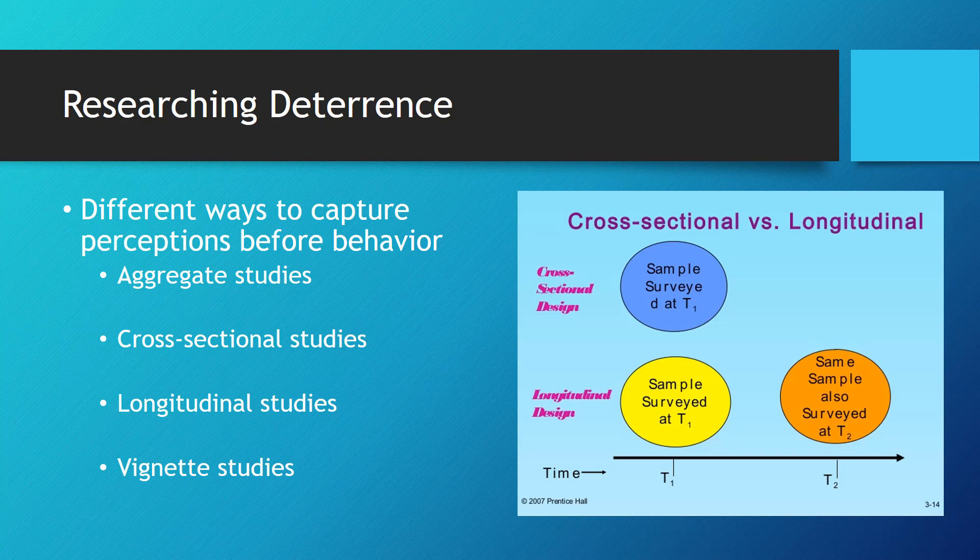Cross-sectional research looks at people at one point in time. The advantage is that it can be done on an individual level, meaning you are talking to people about how they think, feel, and act. The most common type used for deterrence research is the self-report questionnaire. For example, a cross-sectional study done on people convicted of shoplifting would ask things like, did you expect to get caught before you committed the crime, or what type of punishment did you think you would get? The problem is still time order — you'd have to gather retrospective data, asking them about something in their past. Human memory is far from perfect, and asking people to recall their thought process before stealing could lead to misremembered and inaccurate data.